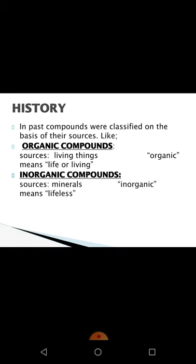History of organic compounds. In the past, compounds were classified on the basis of their sources — as organic compounds and inorganic compounds. Compounds obtained from living organisms (plants and animals) were called organic compounds. The word 'organic' means life or living, so compounds obtained from living things are organic. For example, sugar (from plants) and urea (from animals) are organic compounds.